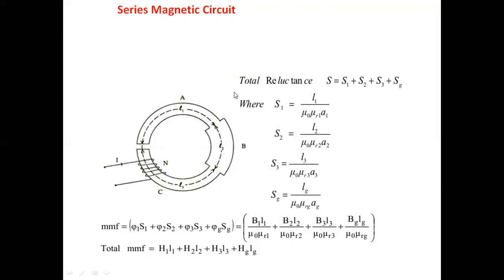So the total reluctance of this series circuit is S, equal to S1 plus S2 plus S3 plus Sg, where Sg is the reluctance of the air gap. S1 is equal to L1 upon (μ0 × μR1 × A1). Similarly, S2 equals L2 upon (μ0 × μR2 × A2), and S3 equals L3 upon (μ0 × μR3 × A3). These are the formulas for reluctance, and you simply add them to get the equivalent reluctance.